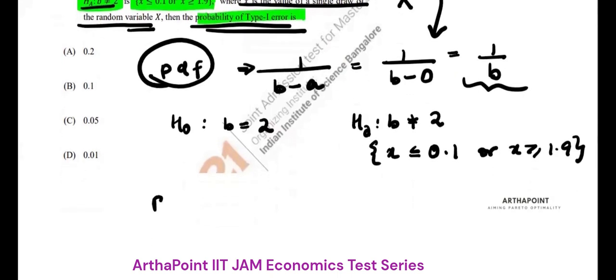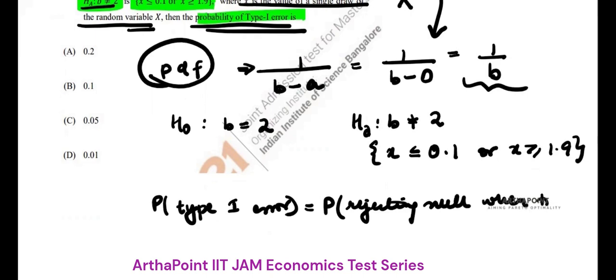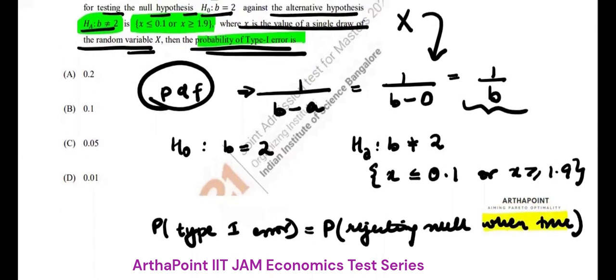The probability of type 1 error is the probability of rejecting null when true. Now see, when will null be true? Null will be true when the value of B will be 2. That's when null is true.